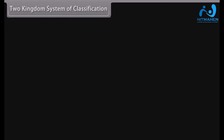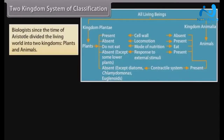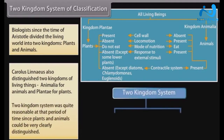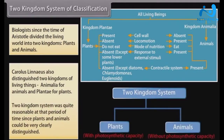Two Kingdom System of Classification. Biologists since the time of Aristotle divided the living world into two kingdoms: plants and animals. Carolus Linnaeus also distinguished two kingdoms of living things — Animalia for animals and Plantae for plants. The two kingdom system was quite reasonable at that period of time, since plants and animals could be very clearly distinguished.